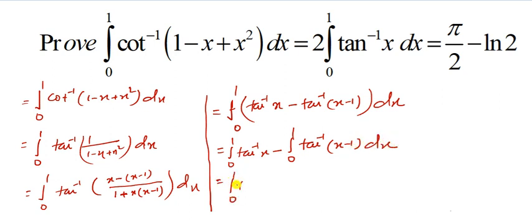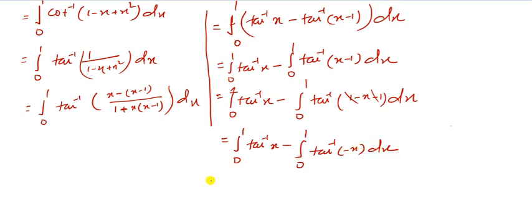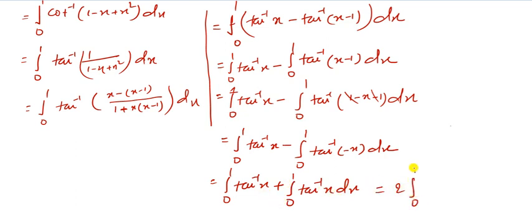Now we apply King's rule on the second integral. Replacing x by (1 minus x), we get tan inverse(1 minus x minus 1), which is tan inverse(minus x). So the expression becomes: the integral from 0 to 1 of tan inverse x dx plus the integral from 0 to 1 of tan inverse x dx, since tan inverse(minus x) equals minus tan inverse x, and the double negative gives a positive. Therefore the whole expression equals 2 times the integral from 0 to 1 of tan inverse x dx.